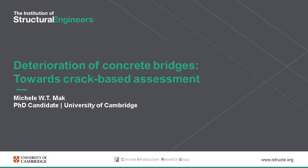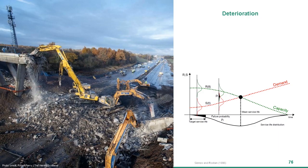Thank you very much and good afternoon. My research is concerned with the durability of reinforced concrete structures. As shown in the previous presentation, structures lose strength over time due to different sources of deterioration that progressively reduce their performance — represented by the resistance curve in green. At the same time, traffic loads increase, shown by the red curve. The intersection of the two is the point of failure. Deterioration is difficult to quantify, so capturing this decrease in resistance with accuracy is very challenging — you must be safe, but not too conservative.